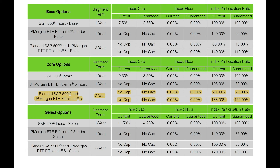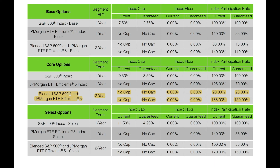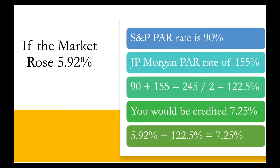With this illustration, the interest credited is based on the blended S&P and JPMorgan index core option, one-year point-to-point. Because this is a blended index, and the S&P has a current participation rate of 90% and the JPMorgan has a current participation rate of 155%, if you average the two it comes to 122.5%. So if the market went up by the maximum illustrated rate of 5.92%, you would be credited 7.25%, which is 5.92% times 122.5%.